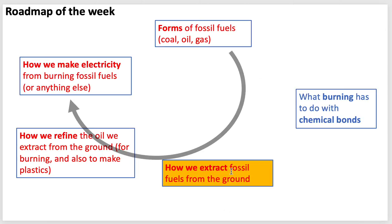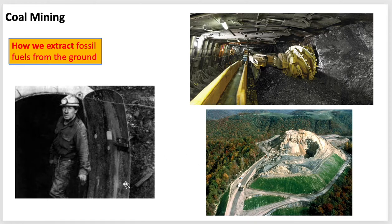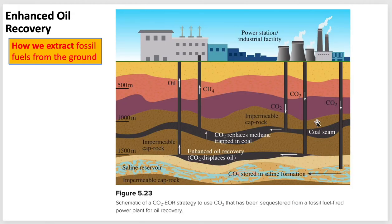So how do we extract fossil fuels from the ground? We've talked about the old-fashioned underground method, the highly mechanized underground method, and mountaintop methods for coal mining. For oil recovery, the idea is that oil gets trapped as it tries to make its way up through the subsurface — trapped by some impermeable cap rock. If you drill into that, you can reach it. This is showing enhanced oil recovery where CO2 is being pumped into the rock to displace some of the oil.